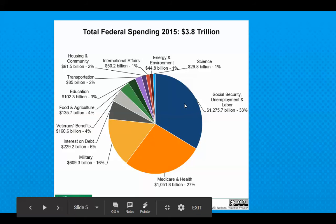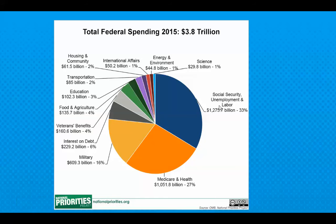These are called entitlements — they're kind of owed to people. Nobody wants to get rid of Medicare, and nobody wants to get rid of Social Security, but it's a big chunk of the government. So take a look and see if you agree with how our federal government spends its money.